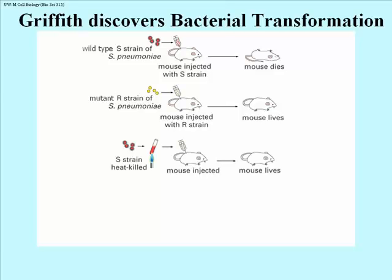What Griffith attempted to do was to produce a vaccine by immunizing mice. The first thing he did was to inject the S strain after it had been heated to kill the actual bacteria. The mouse survived the injection and was quite alive and healthy after 24 hours. But if that mouse were re-injected with living wild type S strain bacteria, it would die in a day — so in fact, no immunity was achieved.